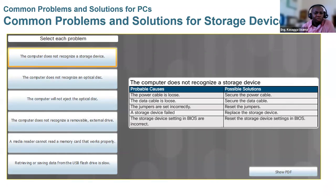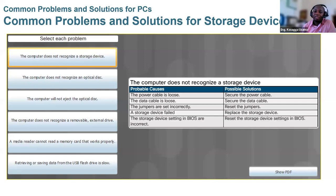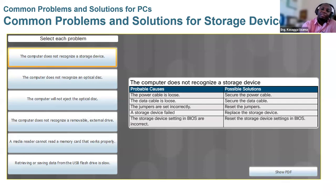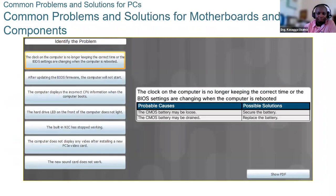The computer does not recognize a removable or external drive — like your flash. If your computer totally fails to recognize a removable drive, try to look for the drivers of that particular gadget. Also, if retrieving or saving data from the flash is very slow, that means you need to increase the capacity of your RAM so it can speed up, or remove some of the content on your machine.